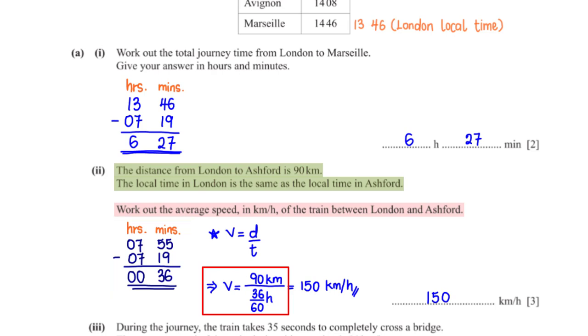To convert 36 minutes to hours, we divide by 60. When we type this into the calculator, we get 150 kilometers per hour.